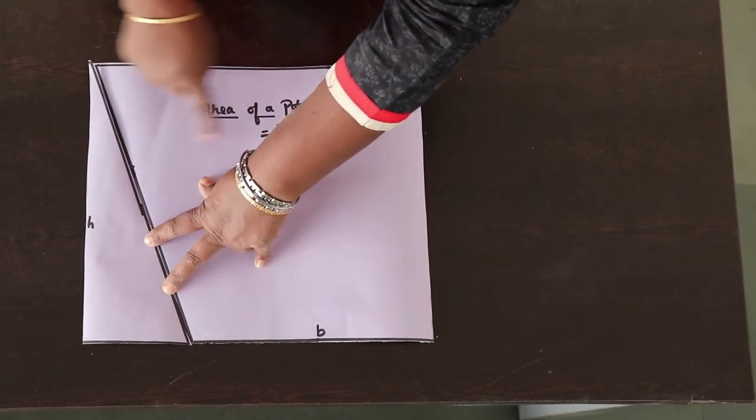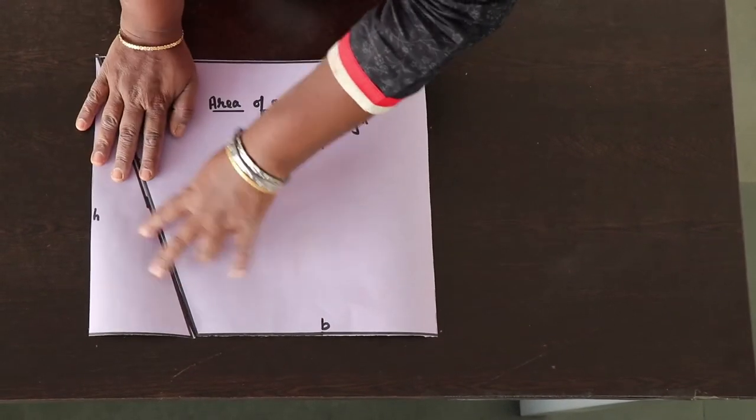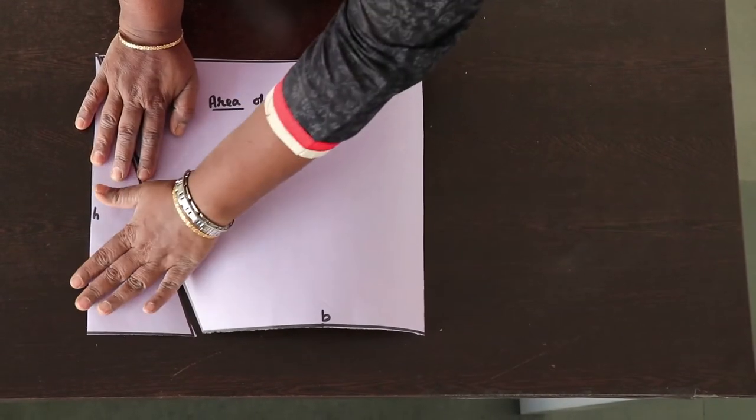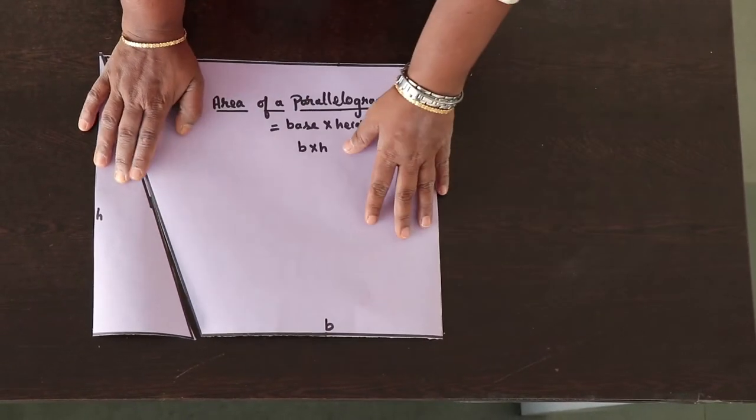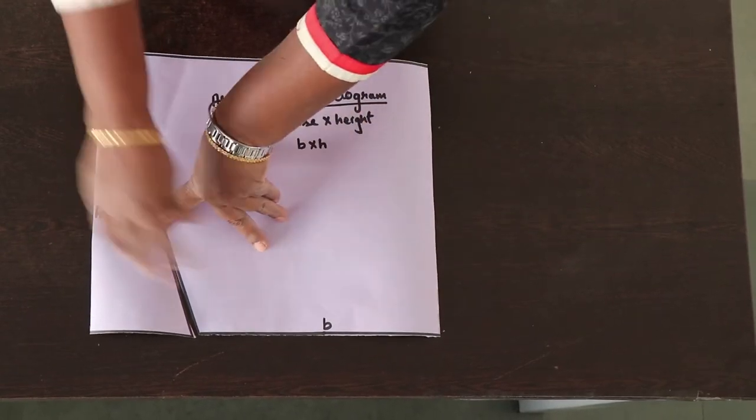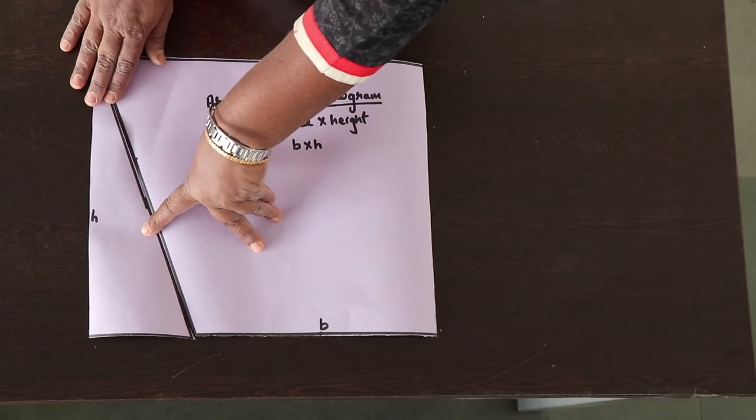So when the area of the rectangle is length into breadth, that is b into h, but this is the same cutout portion of a parallelogram. This entire region is also from the same previous parallelogram itself.